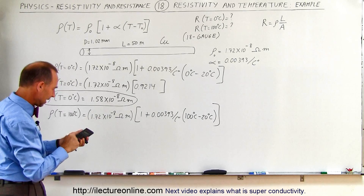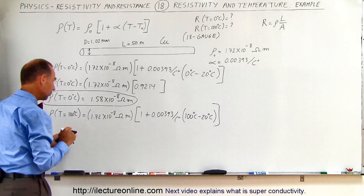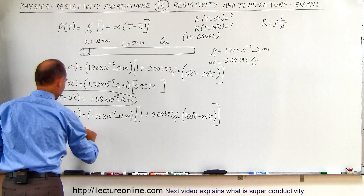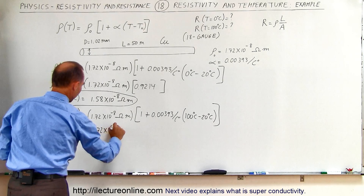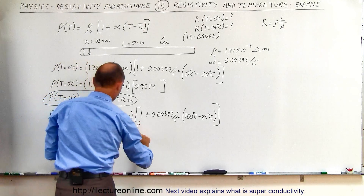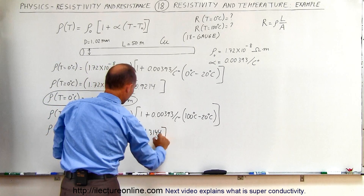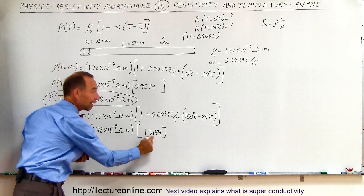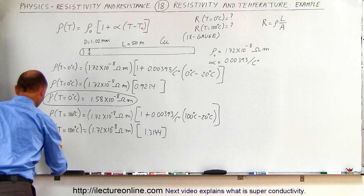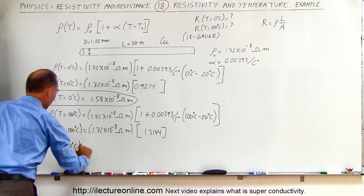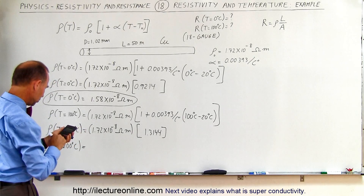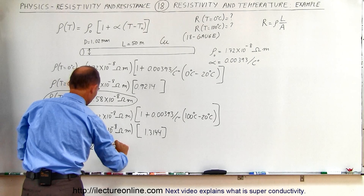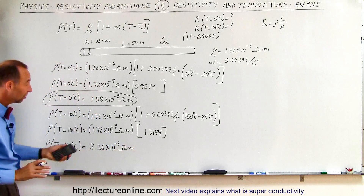So we have 80 times 0.00393 added to 1, giving an intermediate factor of 1.3144. The resistivity in the copper wire has increased by 31% when raising the temperature from 20 to 100 degrees centigrade, which is fairly significant. Multiplying 1.72 times 10 to the minus 8 times 1.3144, the resistivity at 100 degrees centigrade equals 2.26 times 10 to the minus 8 ohm-meters.